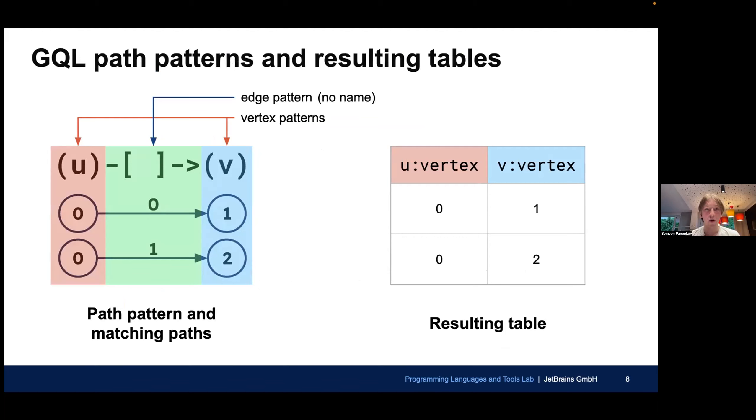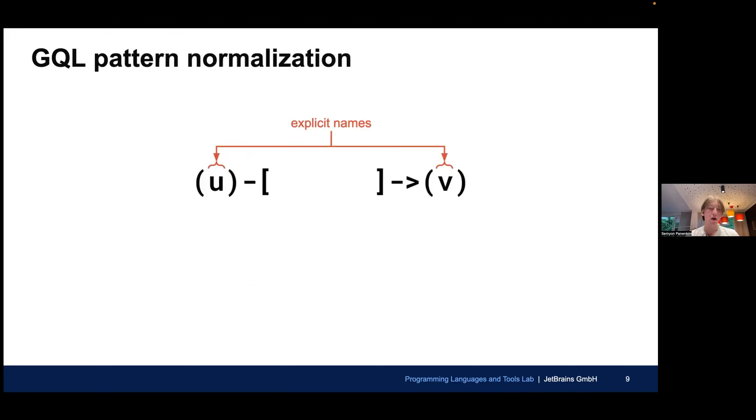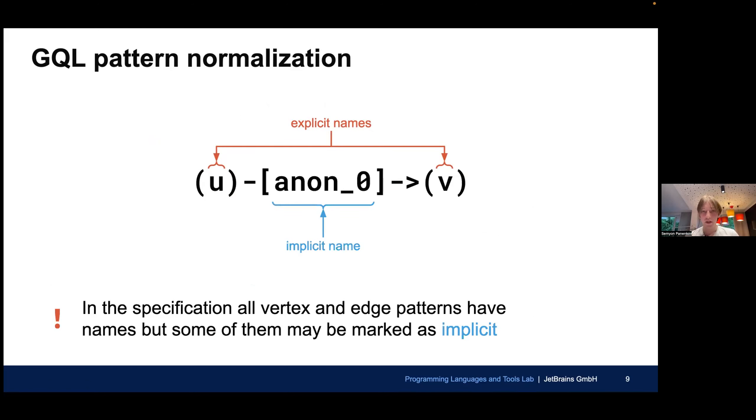We all know that if you omit a name for a vertex or edge pattern, for example, in this example, we have omitted a name for an edge pattern, then the resulting table that represents all the paths that match this pattern won't contain the column for this edge pattern. But the absence of name is not really convenient. You may need to refer to this edge pattern during internal computations. And therefore, in our specification, databases perform pattern normalization. In our case, this means that if you do not specify an explicit name, the implicit name is being generated by the database. And in our specification, we assume that all vertex and edge patterns have names, but some of them may be marked as implicit.